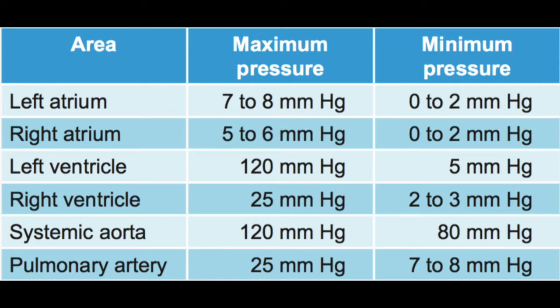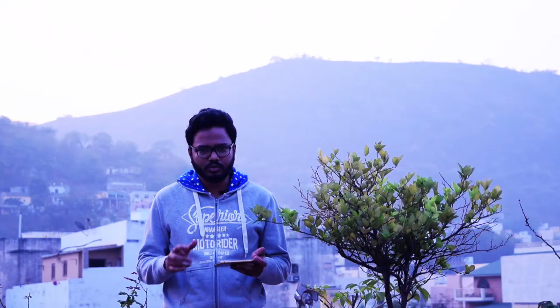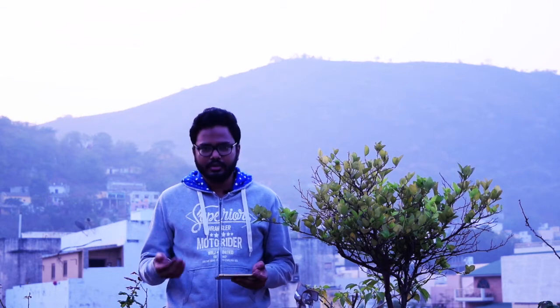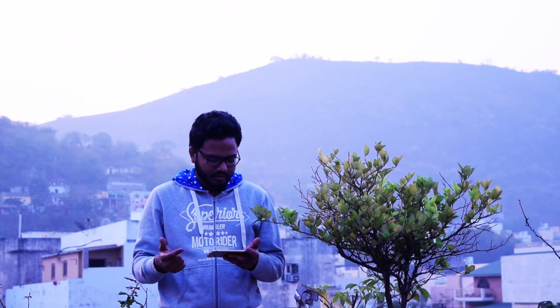For reference, the pressure values across the heart are: left atrium — max 7–8 mmHg, min 0–2 mmHg; right atrium — max 5–6 mmHg, min 0–2 mmHg; left ventricle — max 120 mmHg, min 5 mmHg; right ventricle — max 25 mmHg, min 2–3 mmHg; systemic aorta — max 120, min 80 mmHg; pulmonary artery — max 25, min 7–8 mmHg. Option D is the correct answer.